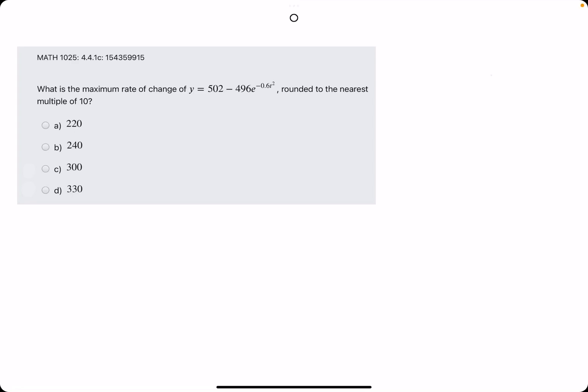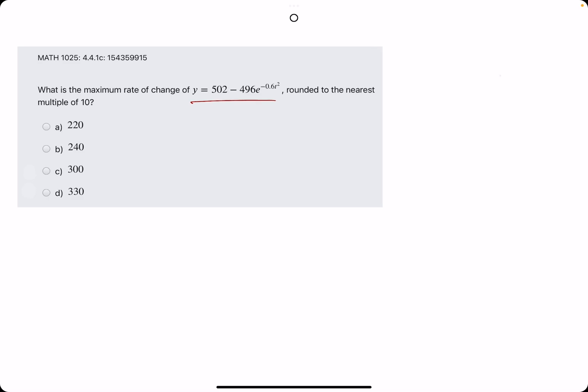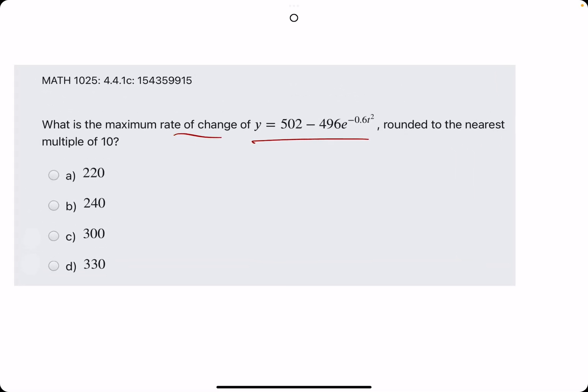Okie dokie. In this problem, they ask what is the maximum rate of change of this function, rounded to the nearest multiple of 10. So, we first want to find the rate of change of this function. In other words, we want to find y prime.